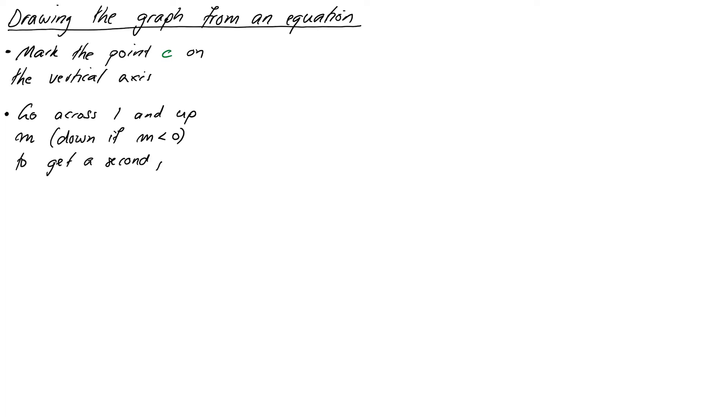So let's take a look at how to draw the graph from an equation. Probably the easiest way to draw a graph given to you in this form is to first mark the point c on the vertical axis, and then to find a second point. So for example, you could go across 1 and up or down m, down if it's negative, or across 2 and up or down 2m, etc. Or you could just use the formula to calculate a second point by putting in a different x value. Once you've got your two points, you can then draw the line connecting them, and that is your line.